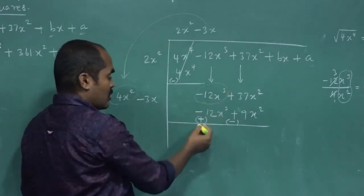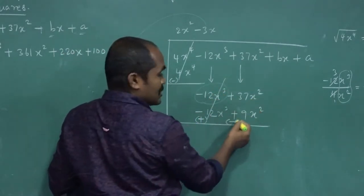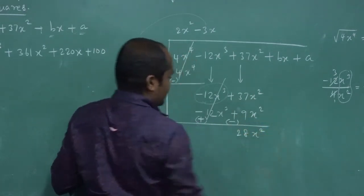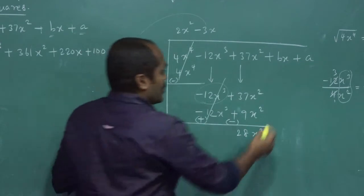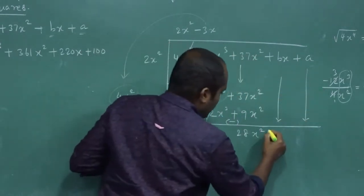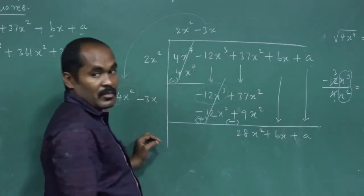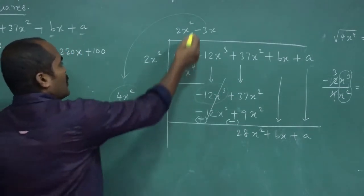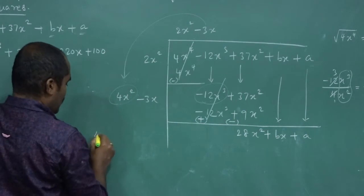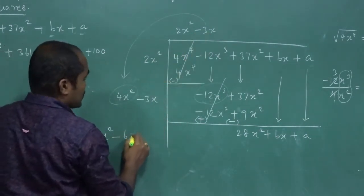Minus 12x³ plus 12x³ cancel. Then 37 minus 9 is 28x². Now bring down the next two terms: plus Bx plus A. These are unknowns. Double the quotient: 2 into 2 is 4x², and minus 3 into 2 is minus 6x. So the new divisor is 4x² minus 6x.